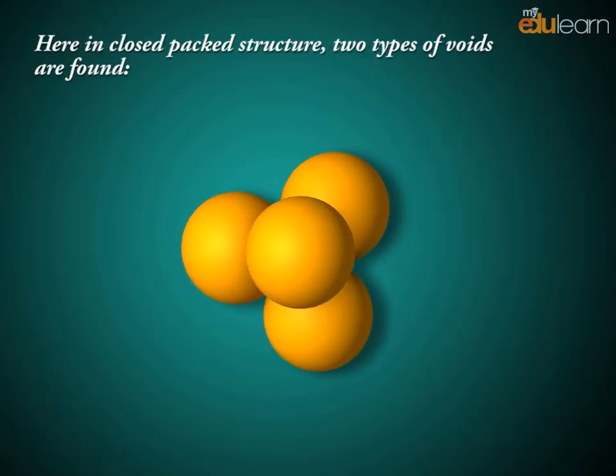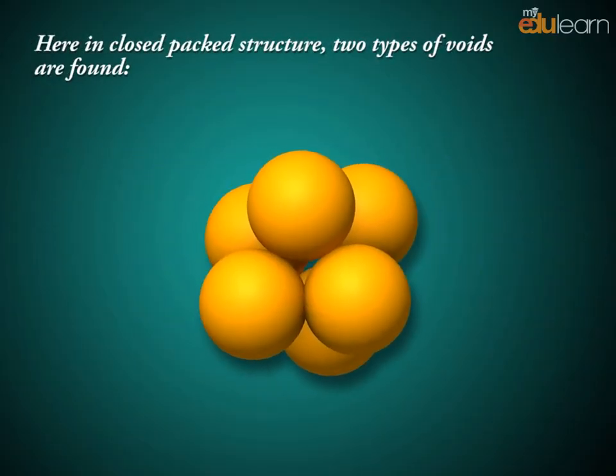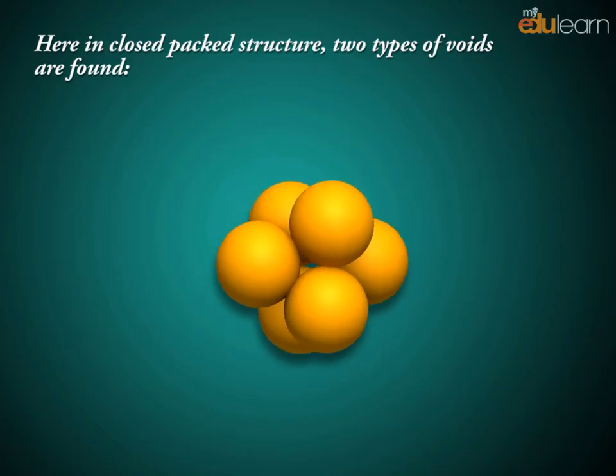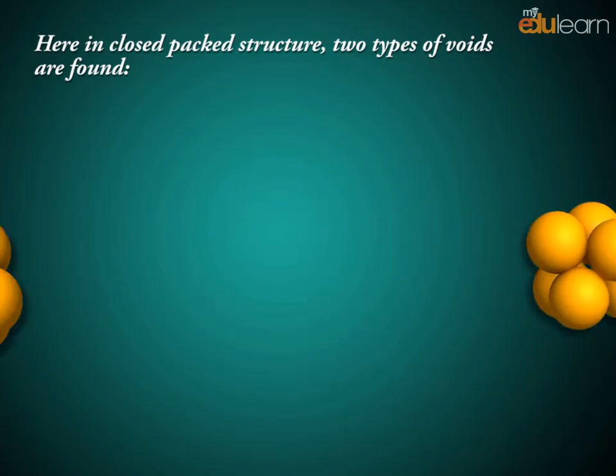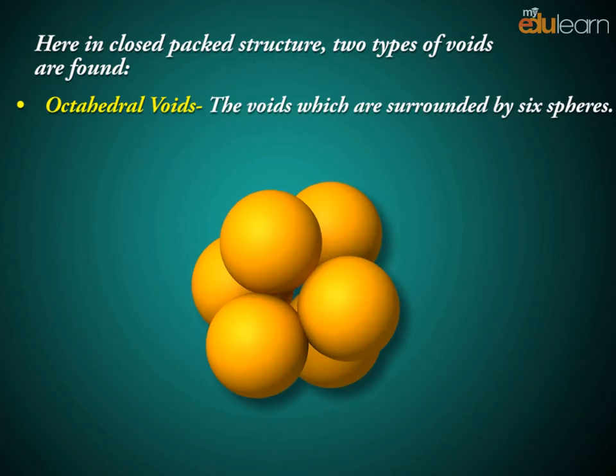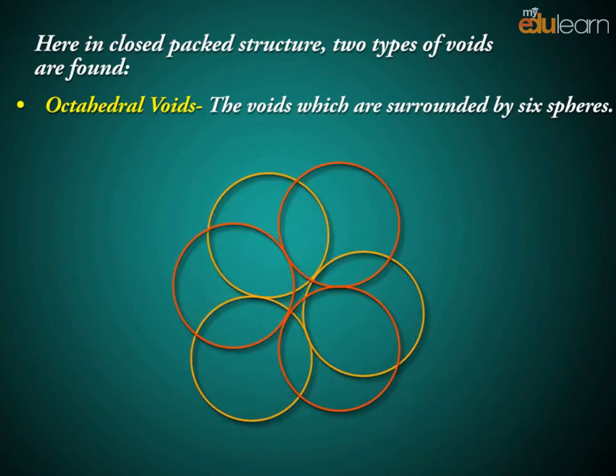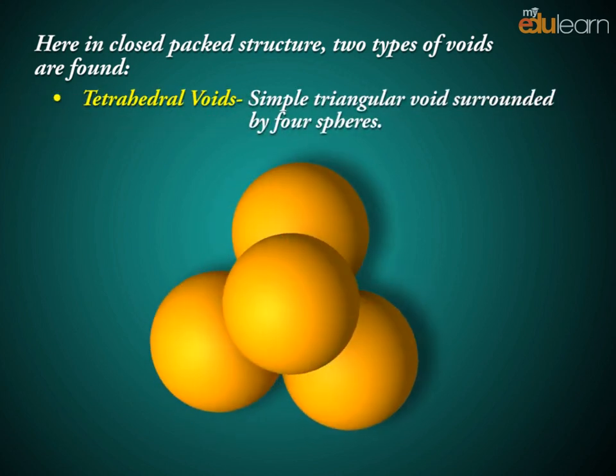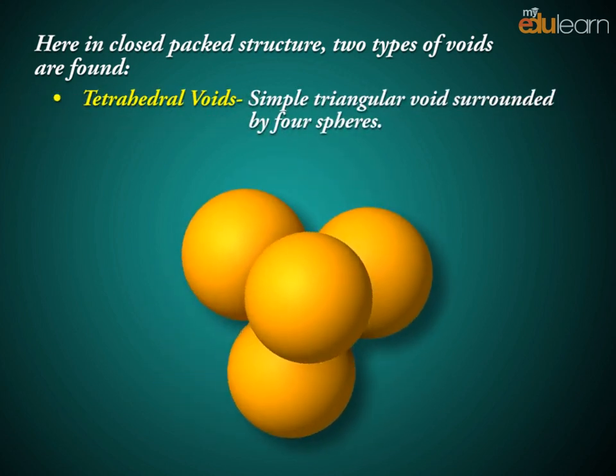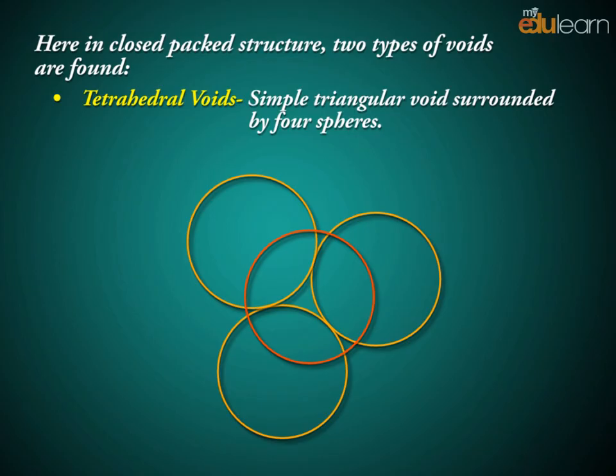Here, in closed-packed structure, two types of voids are found: Octahedral voids - the voids which are surrounded by 6 spheres. Tetrahedral voids - simple triangular void surrounded by 4 spheres.